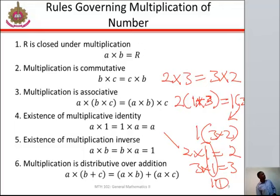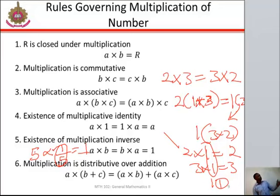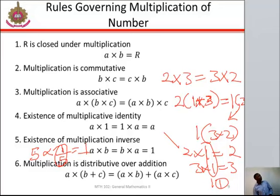Then the fifth rule is existence of multiplicative inverse — that is what you multiply a number by to give you 1. In this case, 5 multiplied by 1 over 5 gives you 1, and 1 over 5 is the inverse. So the multiplicative inverse of 5 is 1 over 5 — that is the inverse of that particular number.